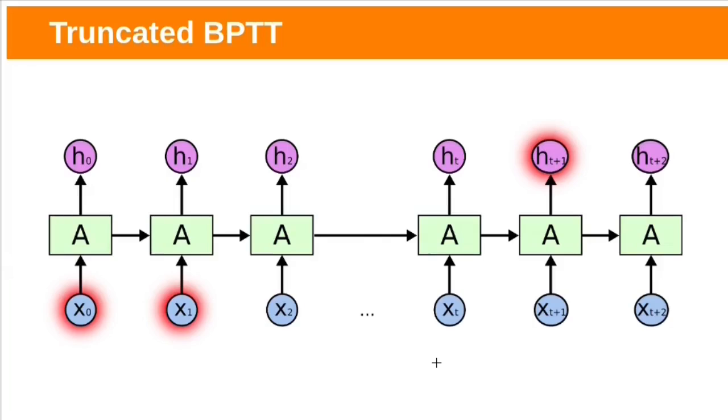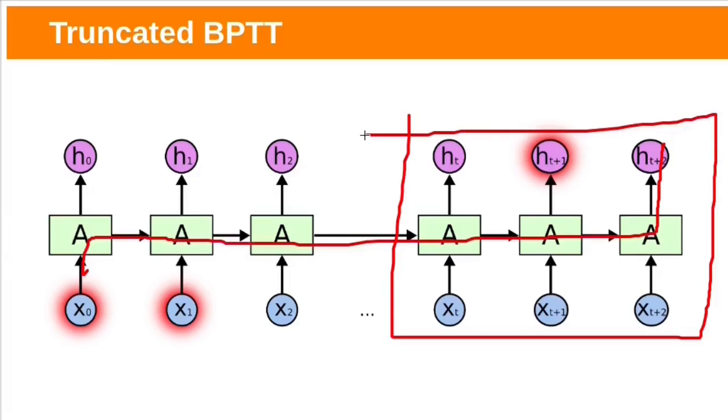To avoid this kind of vanishing and exploding gradients problem, many people use truncated backpropagation through time means this backpropagation will not be done through all of these time steps only it will be stopped after some time steps.